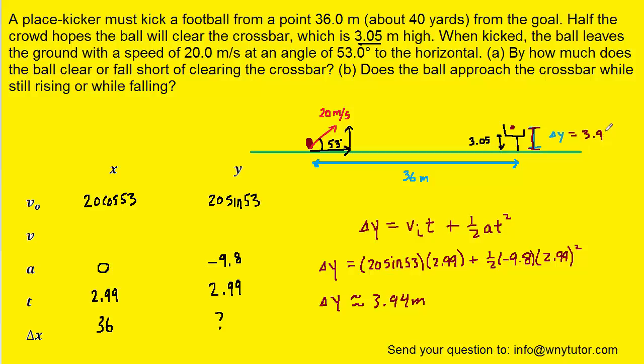In other words, it's the height of the football. So we have 3.94 meters in height, that's where the ball is. The goal post was only 3.05 meters off the ground, if you will recall. So indeed, the football will clear the goal post.